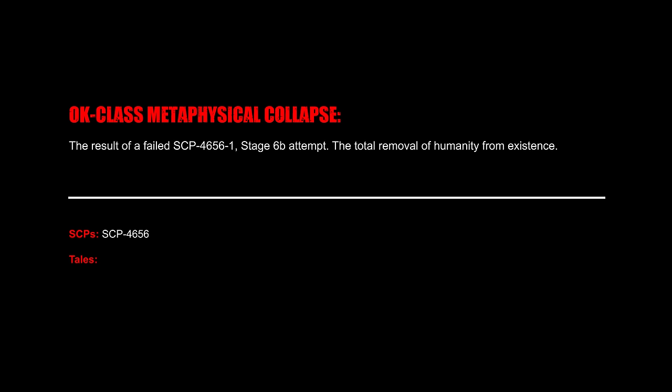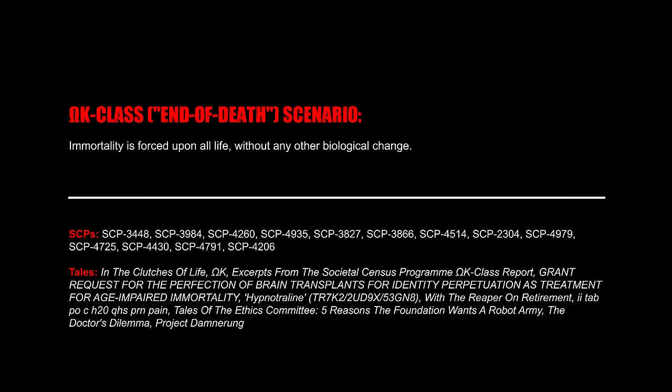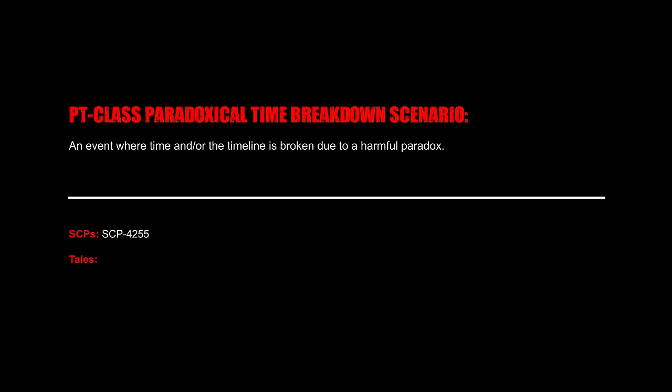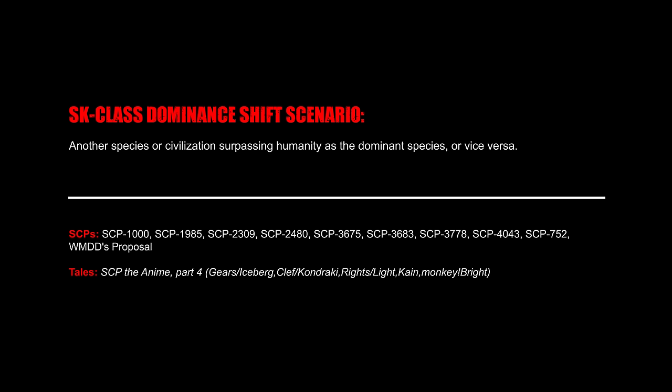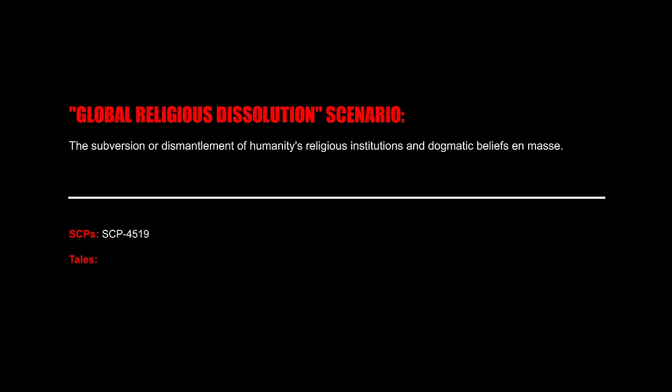Multi-Universal Amalgamation Scenario: When our universe intersects with another. OK Class Metaphysical Collapse: The result of a failed SCP-4656-1 Stage 6B attempt — the total removal of humanity from existence. Omega-K Class End of Death Scenario: Immortality is forced upon all life without any other biological change. PT Class Paradoxical Time Breakdown Scenario: An event where time and/or the timeline is broken due to a harmful paradox. SK Class Dominance Shift Scenario: Another species or civilization surpassing humanity as the dominant species, or vice versa. Global Religious Dissolution Scenario: The subversion or dismantlement of humanity's religious institutions and dogmatic beliefs.